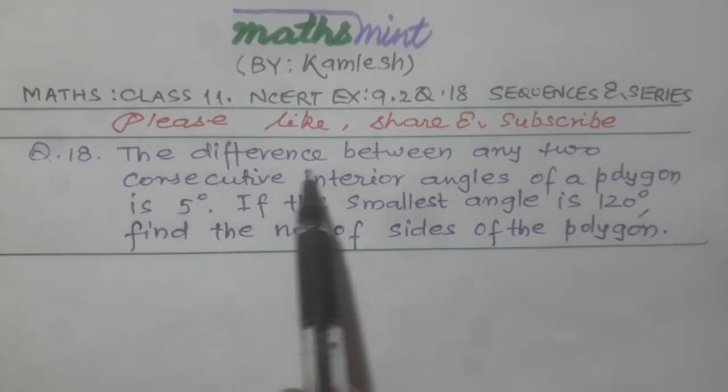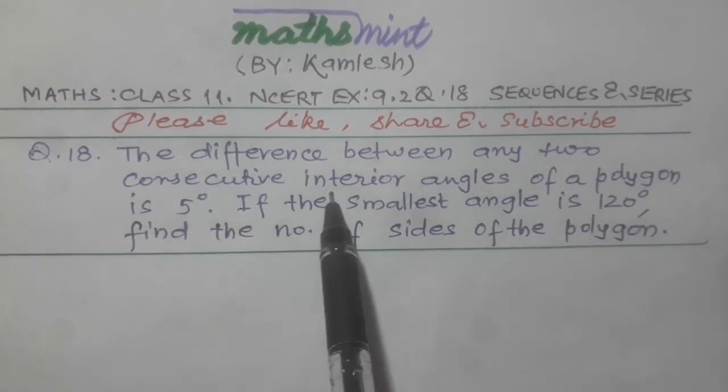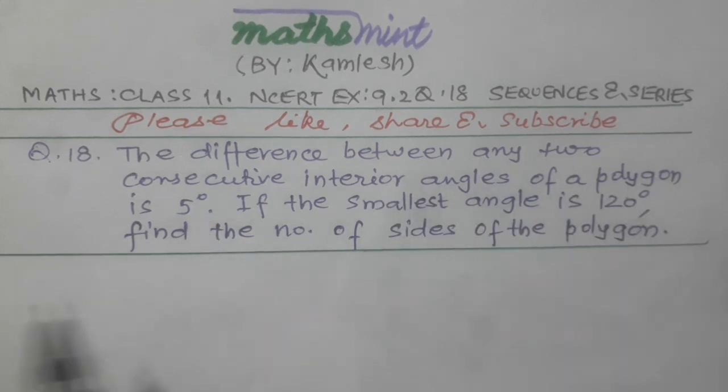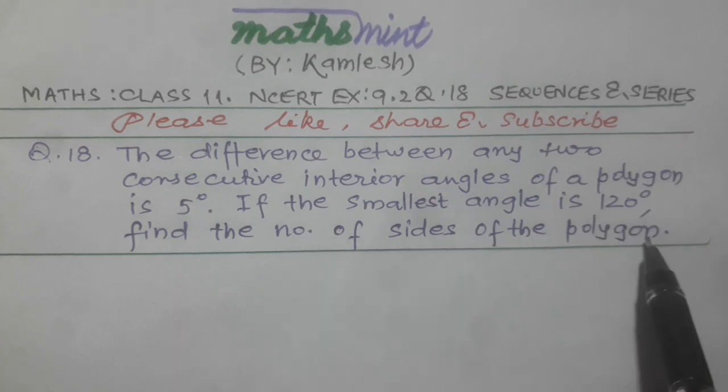In the question it is given: the difference between any two consecutive interior angles of a polygon is 5 degrees. If the smallest angle is 120 degrees, find the number of sides of the polygon.